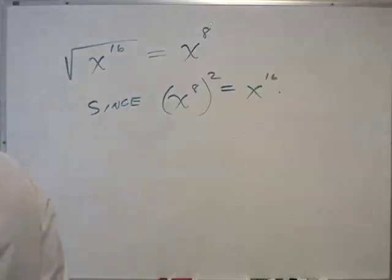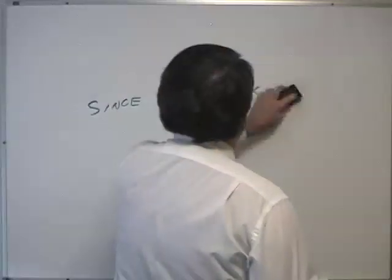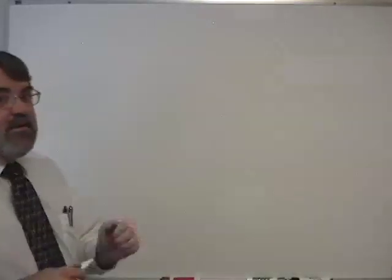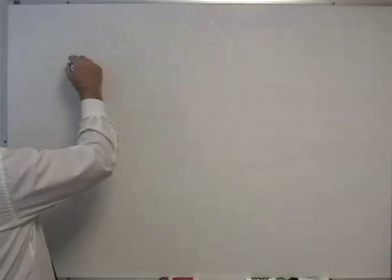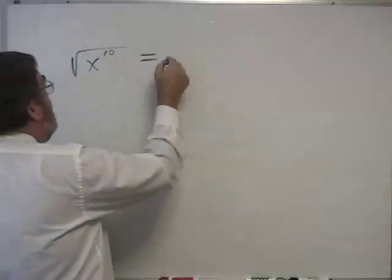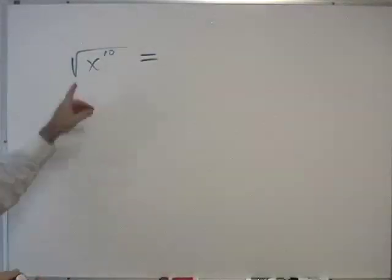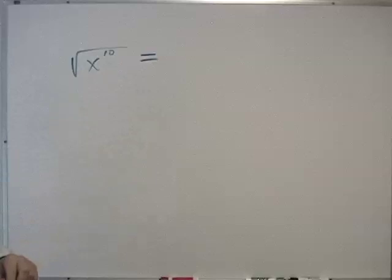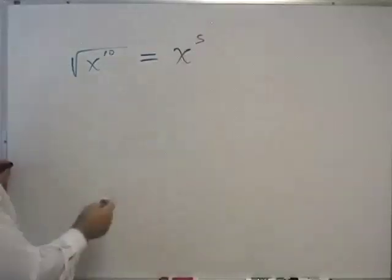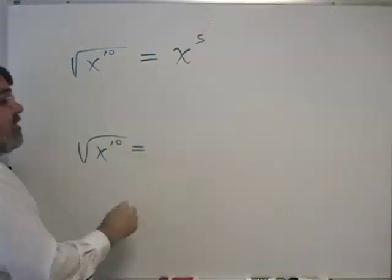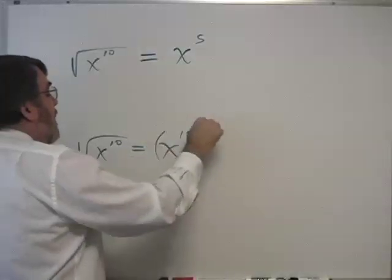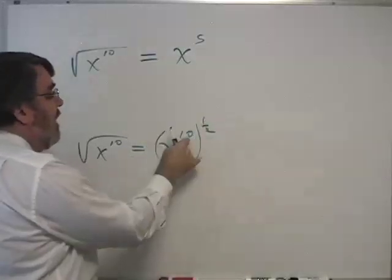Now let's look at another problem. What is the square root of x to the tenth? If this holds up, then it's half of the exponent: x to the fifth. That half is straightforward because square root means one-half power, and one-half of ten is five.